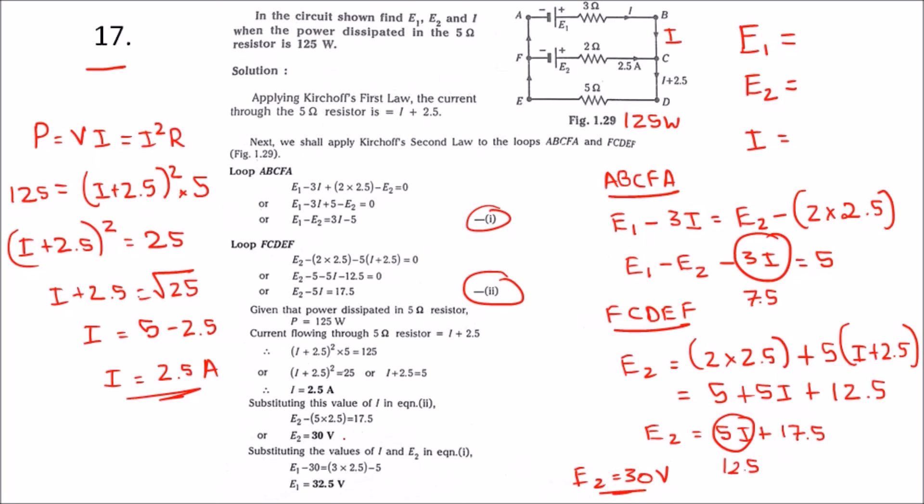We will simplify this in equation number 1 and we will get E1 as 32.5. The final answer will be 32.5 volts, 30 volts, and i is 2.5 amps.